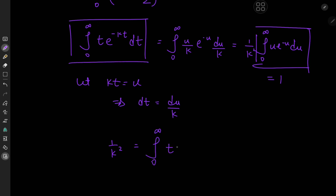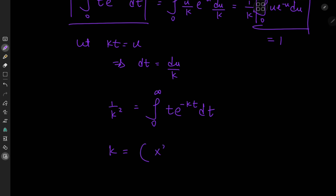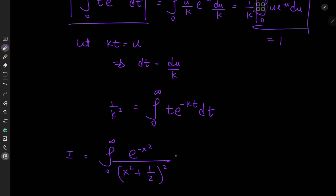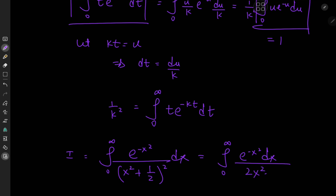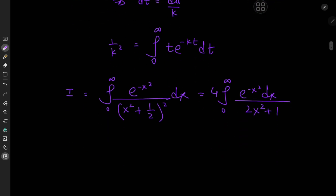In our case, k equals x squared plus one-half, squared. The target integral I is the integral from 0 to infinity of e to the negative x squared divided by x squared plus one-half, squared, dx. Simplifying the denominator gives e to the negative x squared over 2x squared plus 1, divided by 4. Expanding by 4, we have 2x squared plus 1 in the denominator and a factor of 4 times the integral. So k equals 2x squared plus 1.